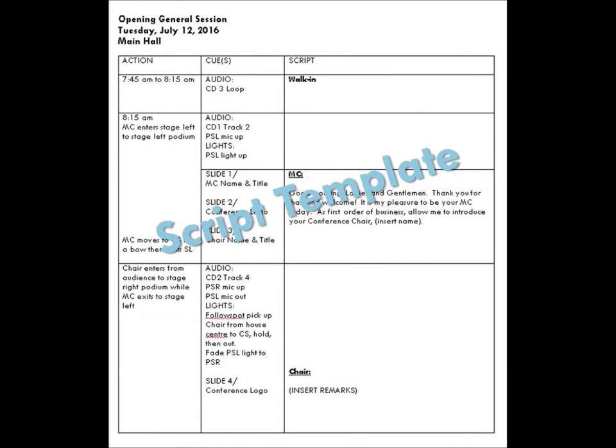Once you have this completed, even if there are still gaps, a script can be developed. At ReallyFabulous, we use a basic three-column template. Column one is for speakers' names, staging instructions, and props. Column two is for the cues — so things like light, sound, and visuals are identified here. And column three is for the spoken word, and can include the video role if you want to include it here.